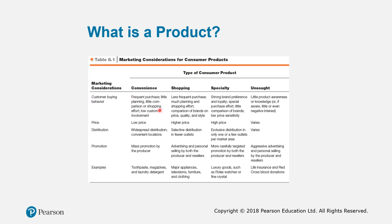Convenience products are frequently purchased products. They are conveniently available everywhere because the price is very low and they are available in many locations. There is mass promotion by the producer because there are many competitors. Examples include toothpaste, a magazine, or laundry detergent.